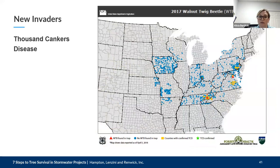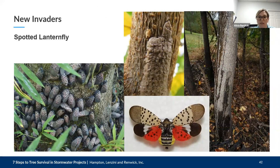The spotted lanternfly — although really pretty, it's really damaging. It's an invasive plant hopper that causes damage by sucking sap from host plants and indirectly through mold that grows on honeydew excretions, inhibiting plant growth and causing death. It's indigenous to China and India and was first recorded in the United States in 2014. It likes maples, birches, walnuts, magnolia, tulip tree, and black locusts. It's definitely something to keep a lookout for — at least this one should be pretty easy to spot.